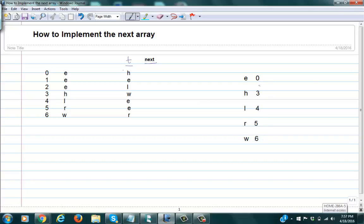This says that we have e starting from zero. In fact the h would start from, so it would go from zero, one, two, h would go from three, and then l would go from four, and r would go from five, and w would go from six.